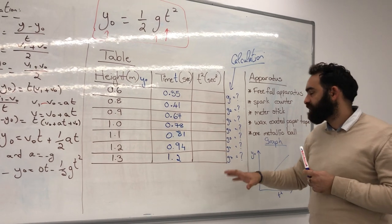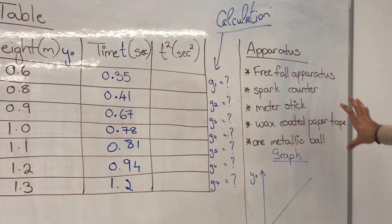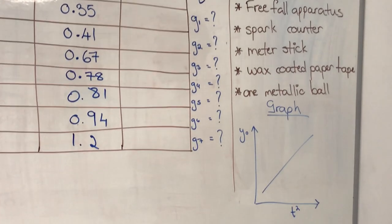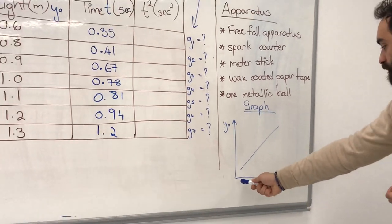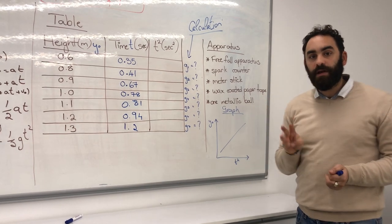After this, of course, the apparatus I stated before, they're on the board here, in case you forget what is the apparatus. After your calculations, we have a graph. What is the graph about? The graph is y0 versus t squared. And this is where the third thing I require from you.